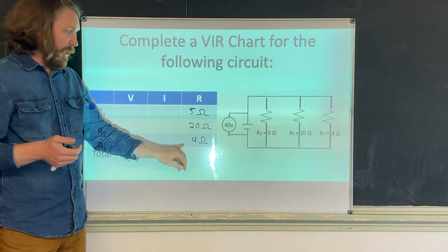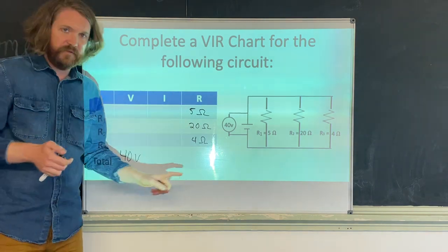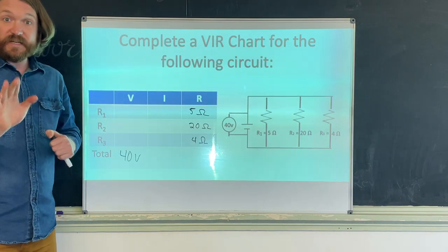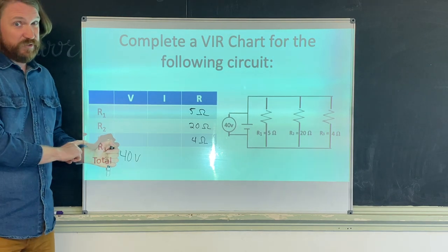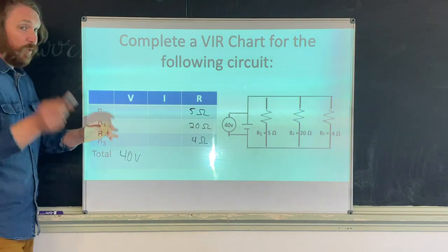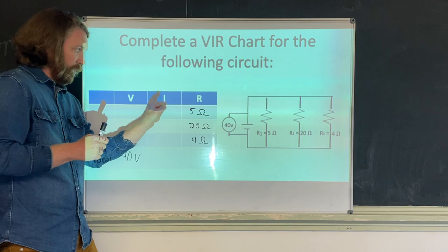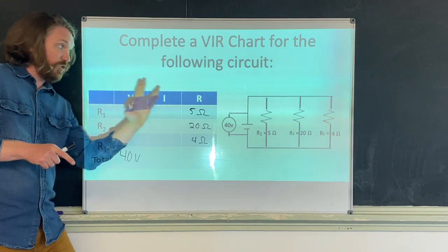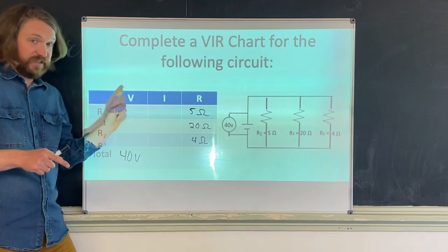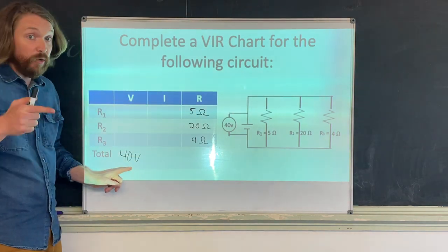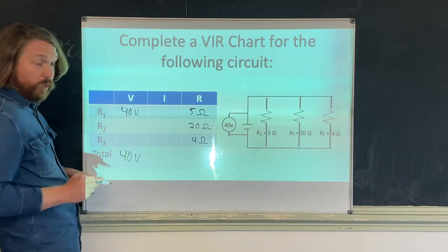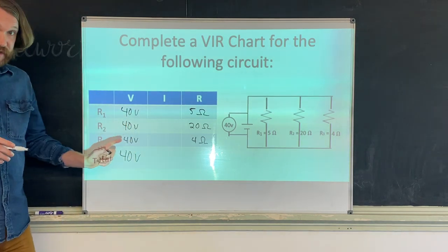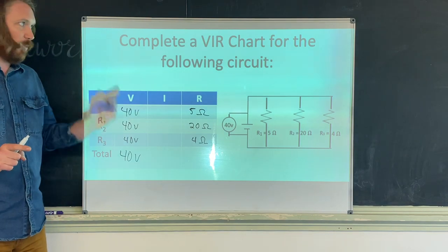You might think you have to do all that reciprocal math, but the VIR chart makes it easier. In a parallel circuit, the voltage is the same everywhere. So if total voltage is 40 volts, then voltage at R1 = 40V, voltage at R2 = 40V, and voltage at R3 = 40V. They're all 40 volts. The voltage is the same everywhere in parallel.